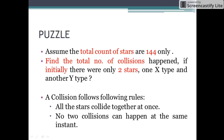Assume that the total count of the stars present are 144. We need to find the total number of collisions that might have happened if initially there were only two stars: one x type and another y type. Remember that all the stars collide together at once, and no two collisions can happen at the same instant. Can you find out the total number of collisions that might have happened so that the total count of the stars becomes 144?